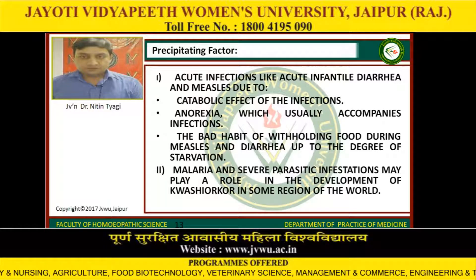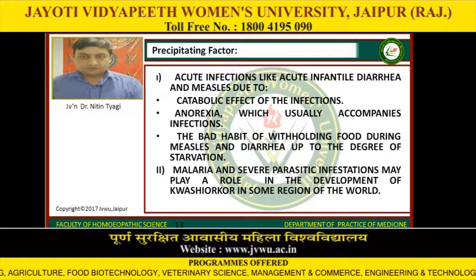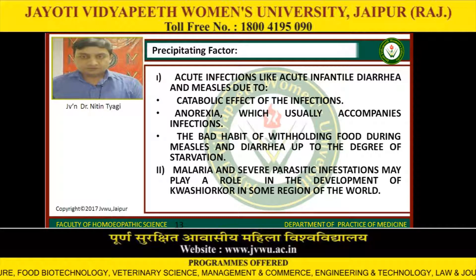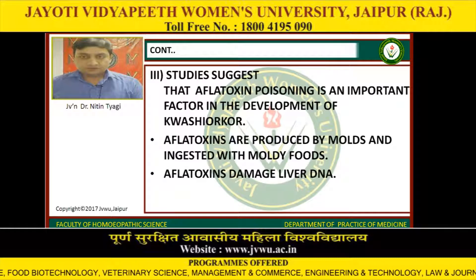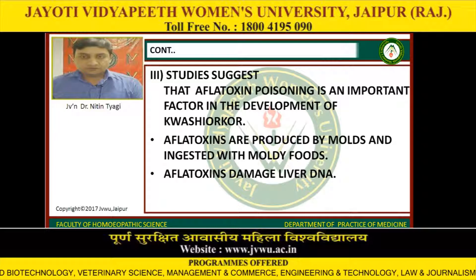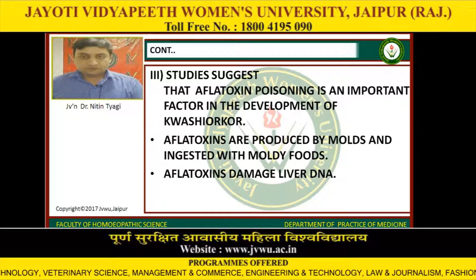Precipitating factors include acute infections like acute infantile diarrhea and measles due to the catabolic effects of infection, anorexia which usually accompanies infections, and the bad habit of withdrawing food during measles and diarrhea to the degree of starvation. Malaria and severe parasitic infestation may play a role in the development of kwashiorkor in some regions of the world. Studies suggest that aflatoxin poison is an important factor in the development of kwashiorkor. Aflatoxins are produced by molds and ingested with moldy food, and aflatoxin damages liver DNA.